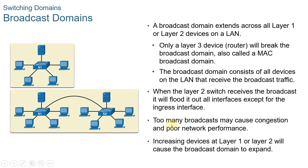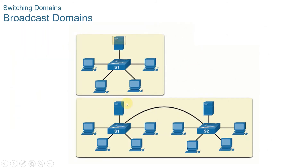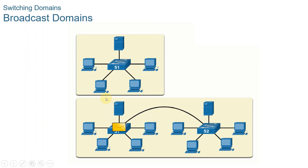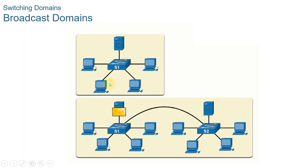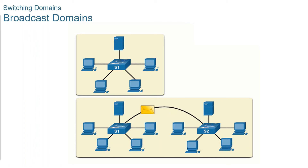Too many broadcasts may cause congestion and poor network performance. Increasing the devices at layer 1 or layer 2 will cause the broadcast domain to expand. When a switch receives a broadcast frame, it forwards the frame out of each port except the ingress port where the broadcast frame was received. Each device connected to the switch receives a copy of the broadcast frame and processes it. Broadcasts are sometimes necessary for initially locating other devices and services on the network, but they also reduce network efficiency, as network bandwidth is used to propagate broadcast traffic.